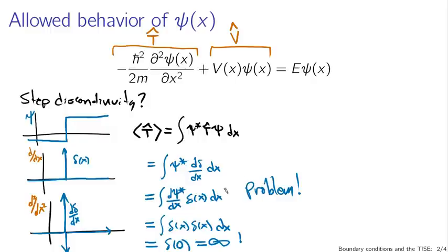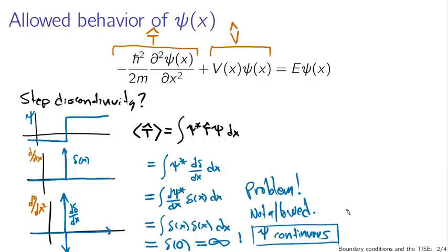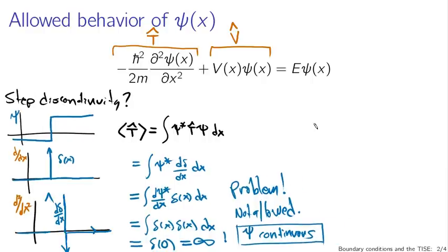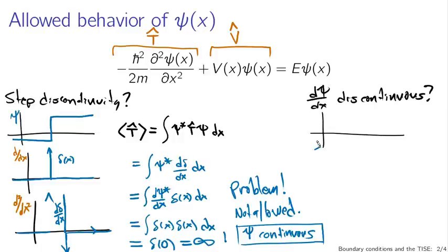The expected value of the kinetic energy being infinity means that whenever we observe this particle we could get infinite kinetic energy — that's not physical, so a step discontinuity in psi is not allowed. This means psi must be continuous. The other condition to consider is what happens if we have a discontinuity not in psi itself, but in dpsi/dx. That means the wave function comes in at one angle and has a kink at the boundary — the slope changes discontinuously.